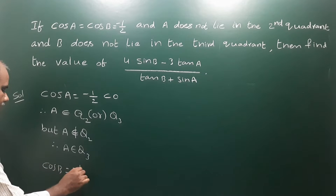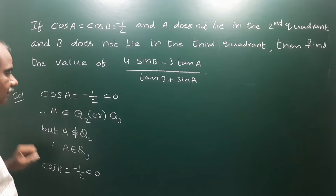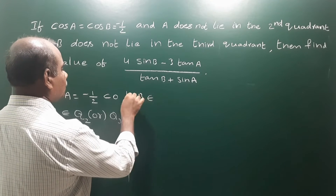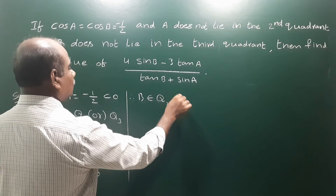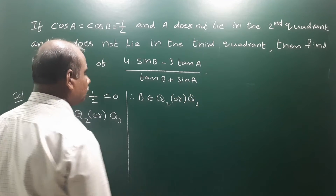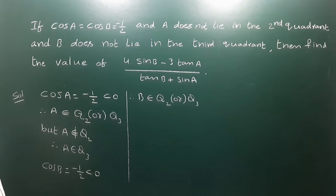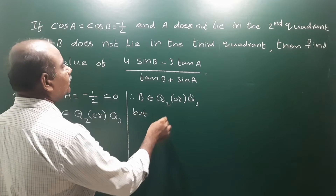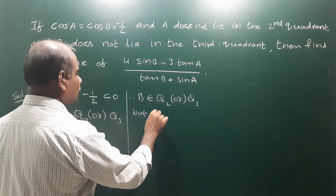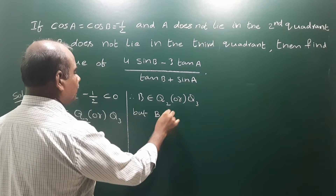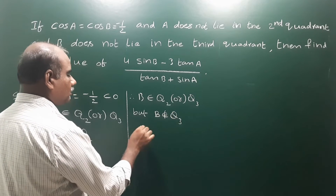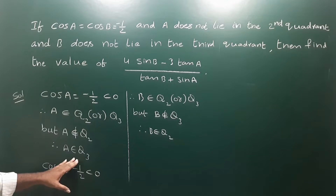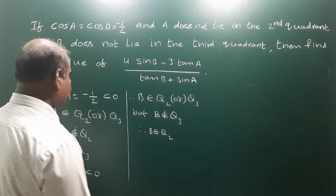cos b is also given as minus 1 by 2, which is less than 0. So cos is negative, meaning b belongs to either Q2 or Q3 — only in those quadrants is cosine negative. But given that b does not lie in the third quadrant, b does not belong to Q3. Therefore b belongs to Q2.